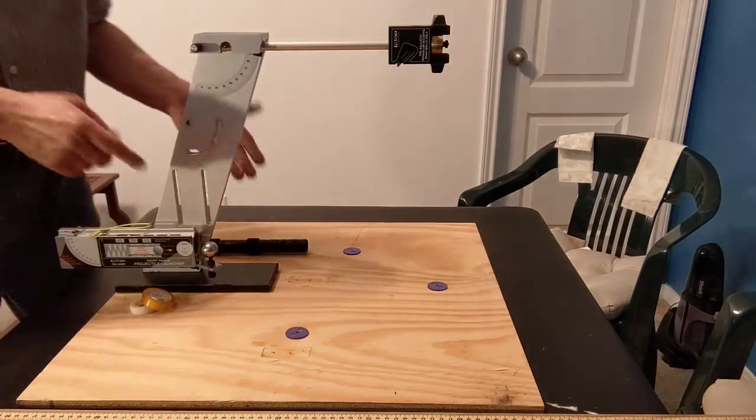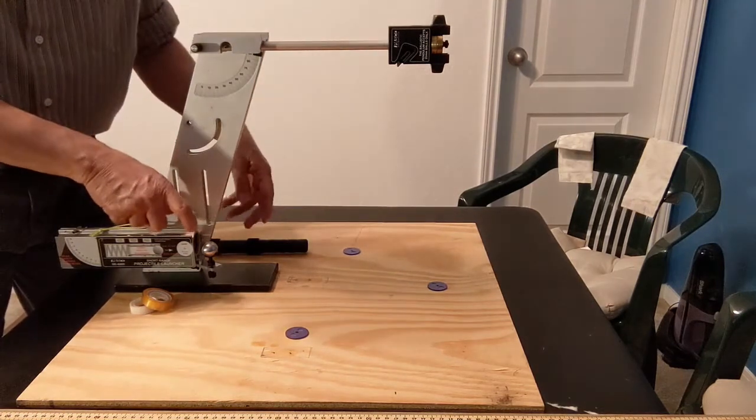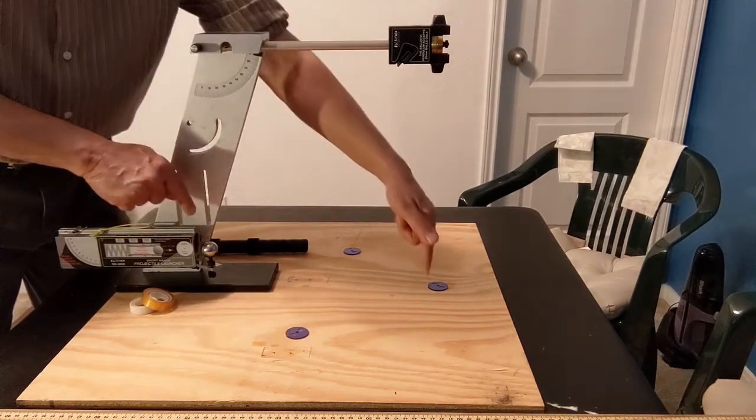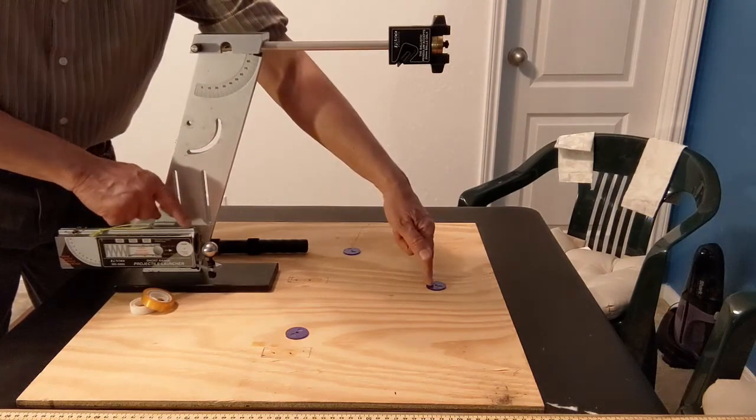Now, we want to do momentum conservation, so the momentum in the x direction is mv and the masses are all equal of both balls. So it's mv, therefore this distance is proportional to the momentum of the original ball.